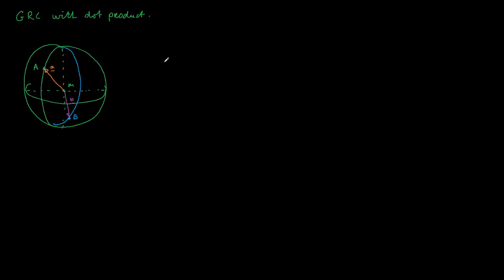Generally we know that the dot product is given as: A dot B equals the length of vector A times the length of vector B times the cosine of the angle between them. So here we have the angle. If we know the angle, we know the distance, because we know that one degree equals 60 nautical miles.